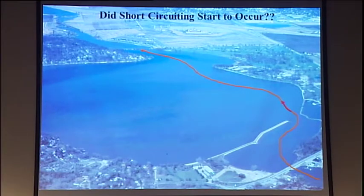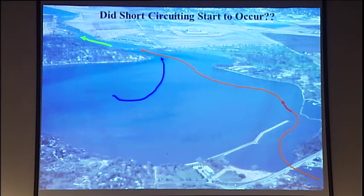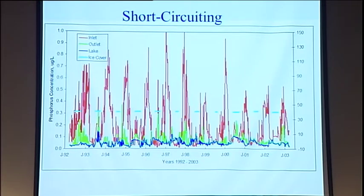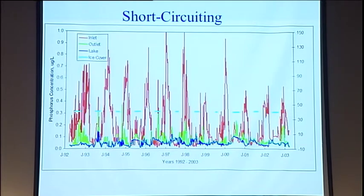How about the short-circuiting — could it start to occur? Comparing colors again, the question is whether the outlet concentration is closer to the blue or closer to the red. We were hoping it would be closer to the red. But if you look at that, really the water is just going right through the system. So the short-circuiting is still not working.